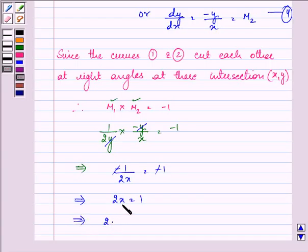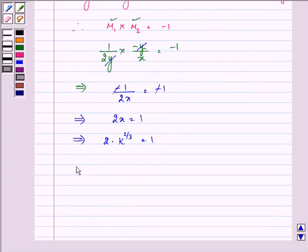We know that the value of x we found above was k raised to the power 2/3. So substituting into 2x equals 1, we get 2 times k to the power 2/3 equals 1.